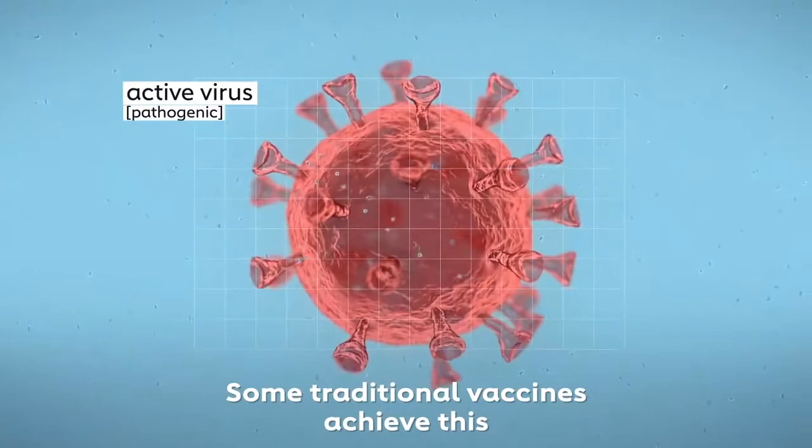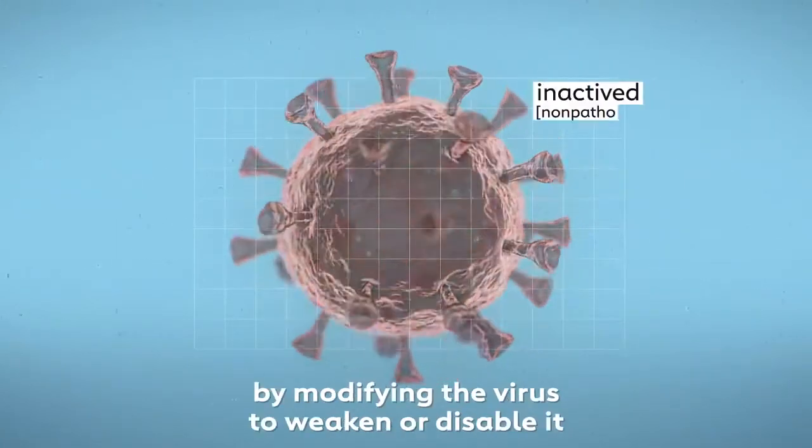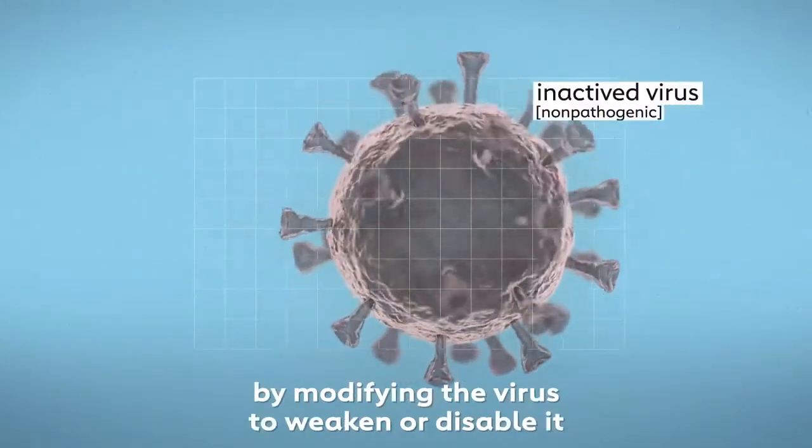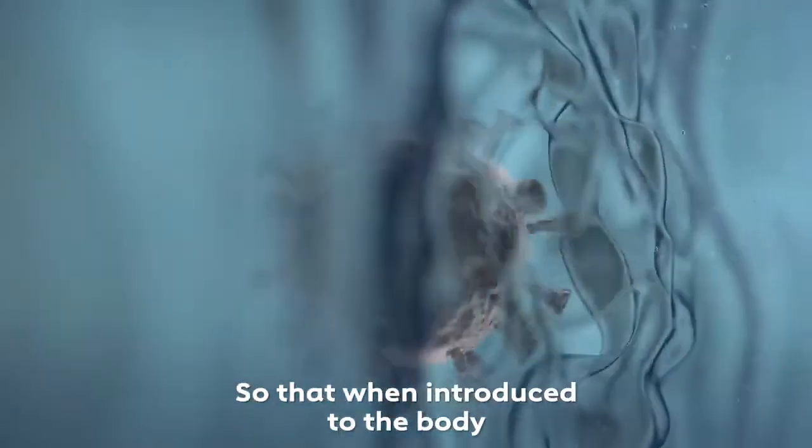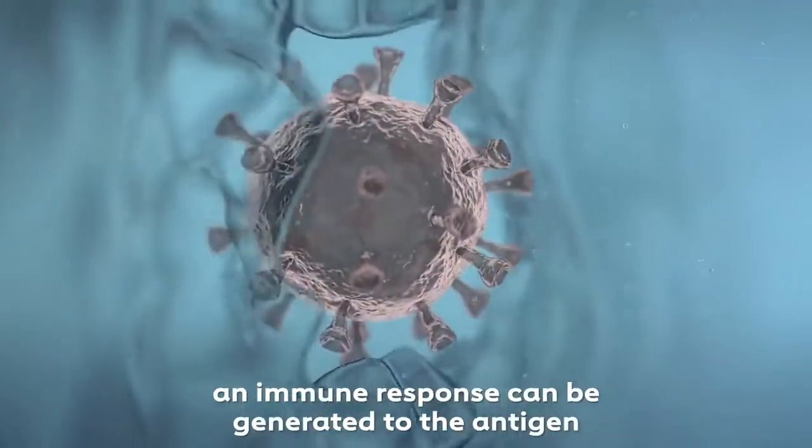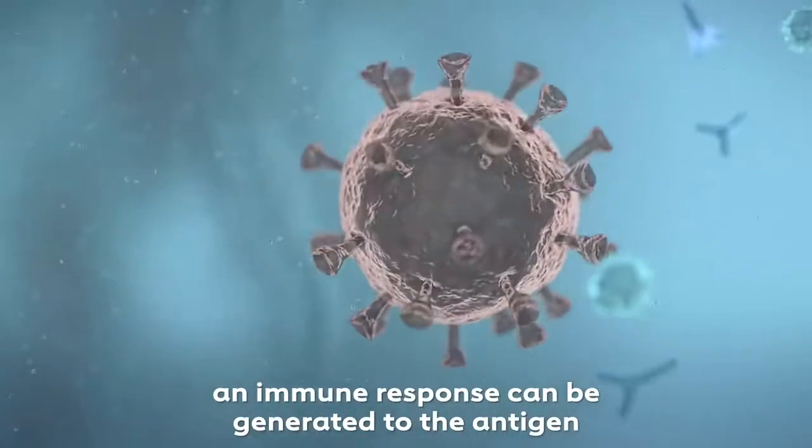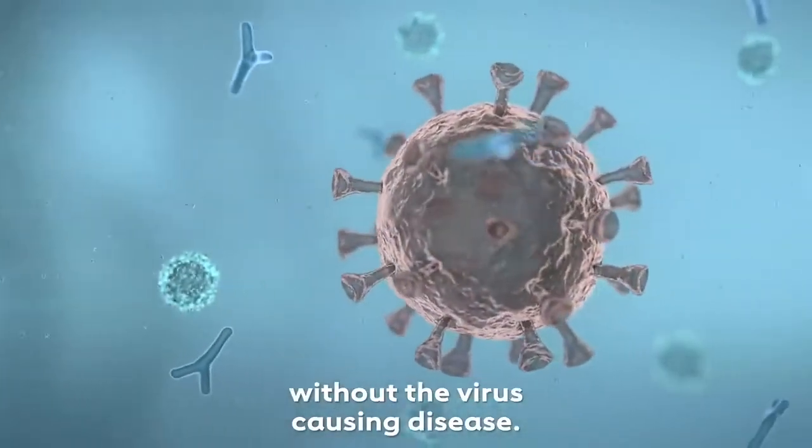Some traditional vaccines achieve this by modifying the virus to weaken or disable it, so that when introduced to the body, an immune response can be generated to the antigen without the virus causing disease.